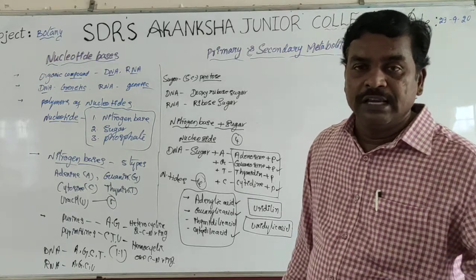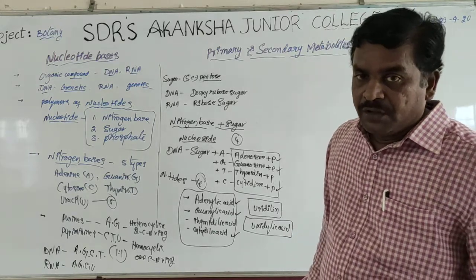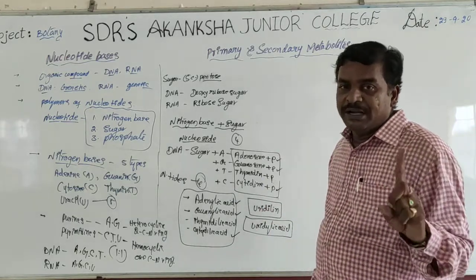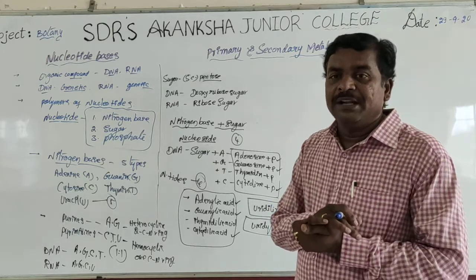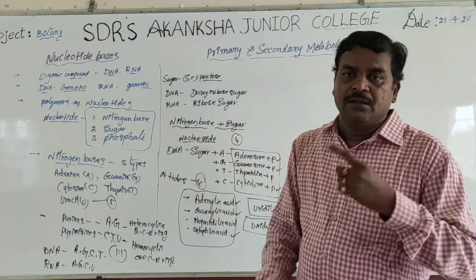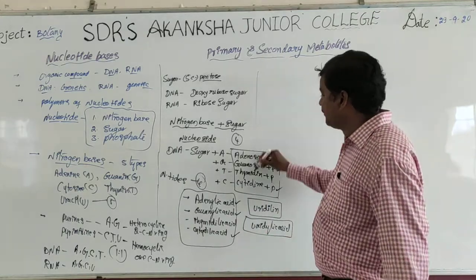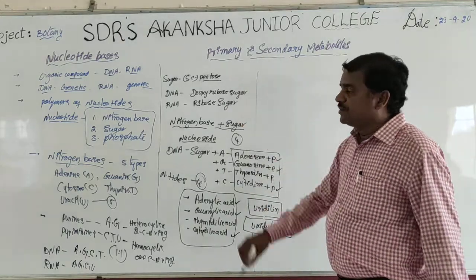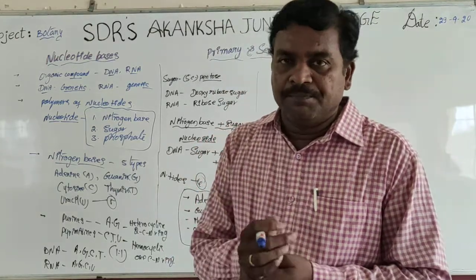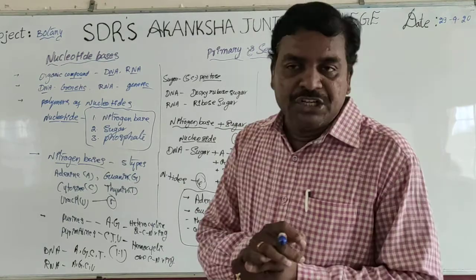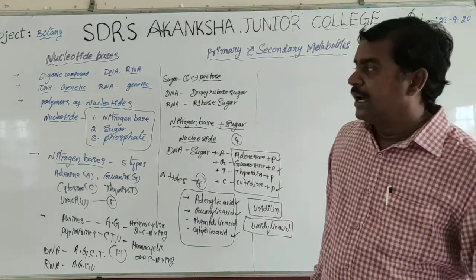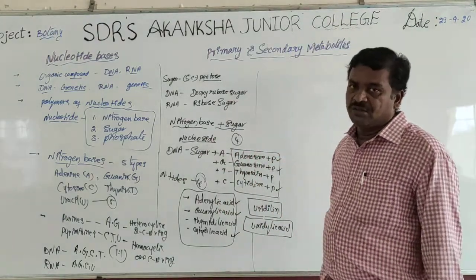Thymidine present in DNA is replaced by uridine in RNA. That is the nature of our nucleotide bases. Generally they are present in nucleic acids, DNA and RNA. DNA is the most abundant genetic material. RNA is also genetic material and they are the polymers of nucleotides.